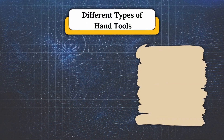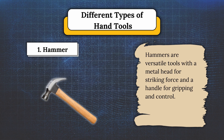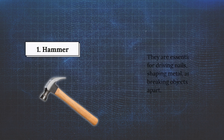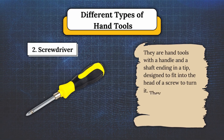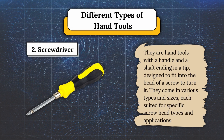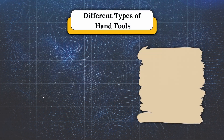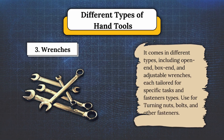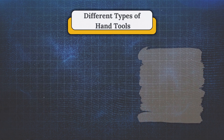Here are the different types of hand tools. Number one, hammer — hammers are versatile tools with a metal head for striking force and a handle for gripping and control. They are essential for driving nails, shaping metal, and breaking objects apart. Number two, screwdrivers — hand tools with a handle and a shaft ending in a tip, designed to fit into the head of a screw to turn it. They come in various types and sizes, each suited for specific screw head types and applications, and are used for driving or removing screws. Number three, wrenches — they come in different types including open-end, box-end, and adjustable wrenches, each tailored for specific tasks and fastener types, and are used for turning nuts, bolts, and other fasteners.